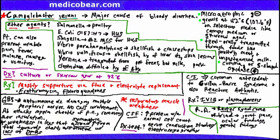There is no specific test for reactive arthritis — the diagnosis is based on the clinical triad. Treatment involves NSAIDs to address the underlying cause. If NSAIDs do not control symptoms, sulfasalazine can be used, and steroid injections can also help.